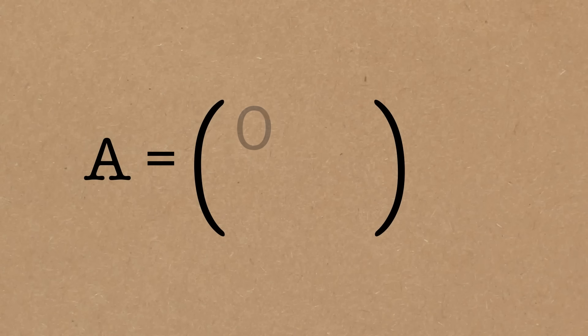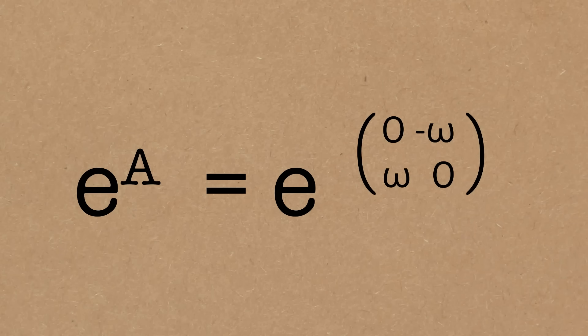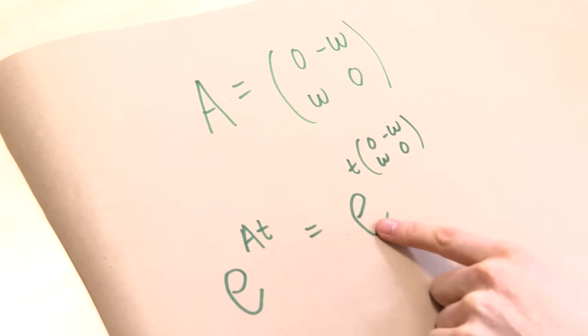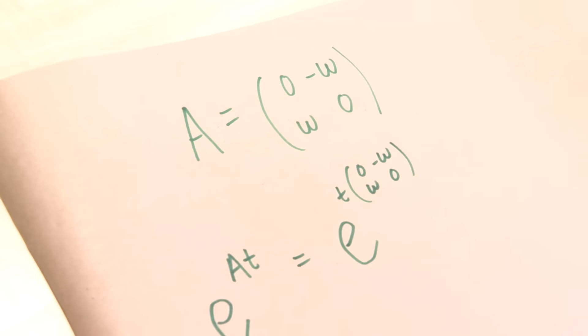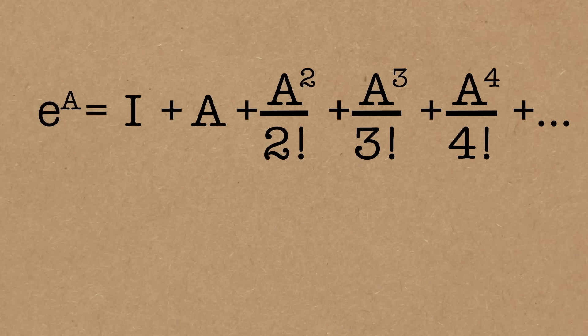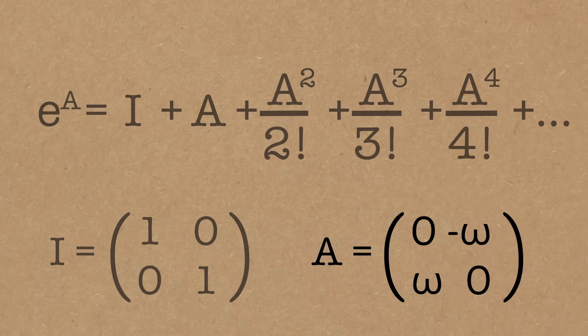Let's compute E to the power of a specific matrix: A equals [[0, -ω], [ω, 0]]. I'm calling it omega because it's a clue at where we're going. What we want to calculate is E to the power of A times t — just a variable — but it's E to the power of this matrix. Quite a ridiculous thing written down. E, the number 2.718, to the power of a matrix. We'll make sense of this using our series expansion. We need to know the powers of A, so let's compute A squared.